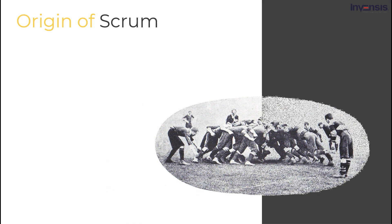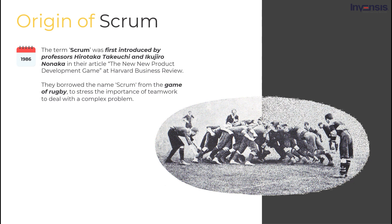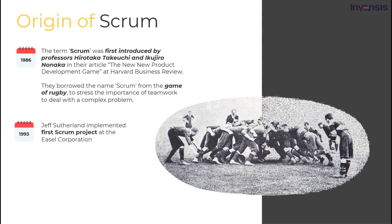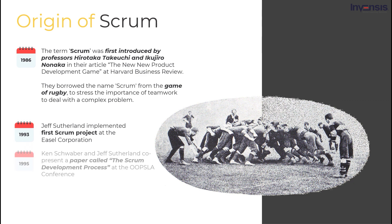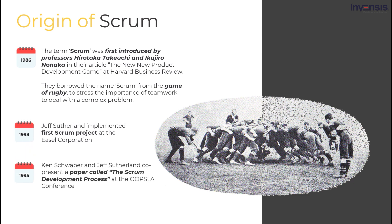So, what is the history behind Scrum? In the year 1986, two management experts Hirotaka Takeuchi and Ikujiro Nonaka introduced the term Scrum. They published a study in the Harvard Business Review which explained that empirical evidence suggests that small cross-functional teams produce the best results. They borrowed the name Scrum from the game of rugby to stress the importance of teamwork in dealing with a complex problem. In 1993, Jeff Sutherland implemented the first Scrum project at the Easel Corporation. After that, software developers Ken Schwaber and Jeff Sutherland each came up with their own version of Scrum, which they presented at a conference in Austin, Texas in 1995.